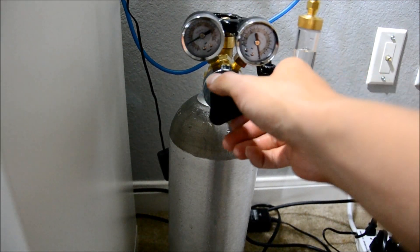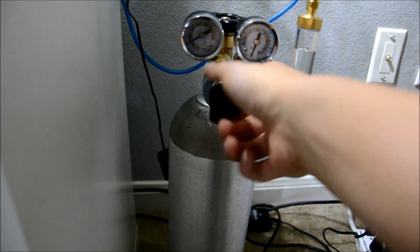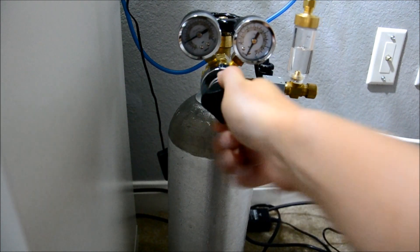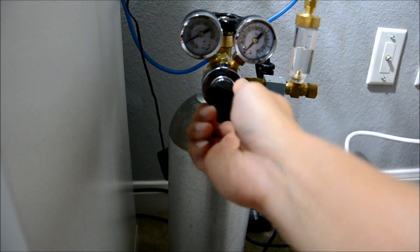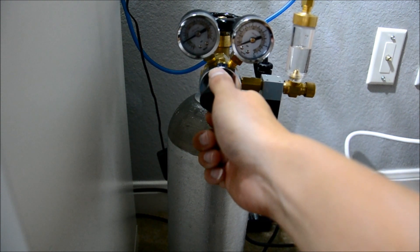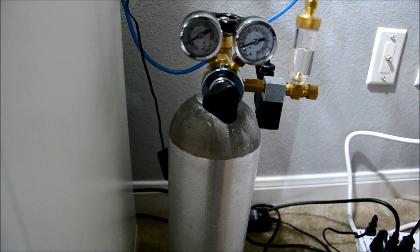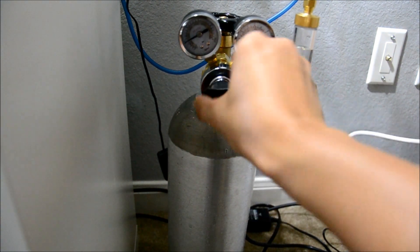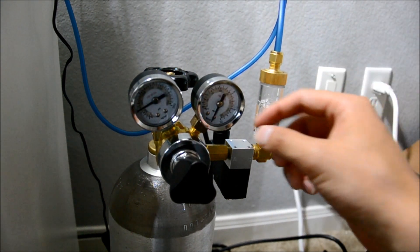All right. And basically when you tighten this down, you should see the PSI here. If you have a two gauge, it should rise. And you want to aim for approximately 20. Okay. Actually. All right. So a couple of things, this gauge here is actually broken. So I'll actually have to email where I bought this from.